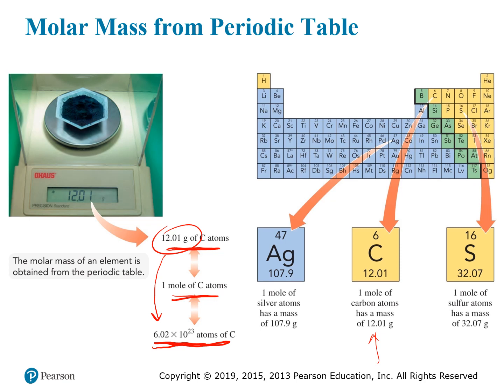Here are a couple more examples. Silver is atomic number 47 and has a mass of 107.9, so one mole of silver weighs 107.9 grams. One mole of sulfur, atomic number 16, has an atomic mass of 32.07, so one mole of sulfur weighs 32.07 grams.